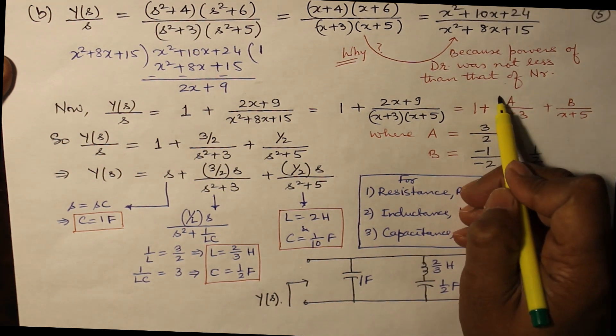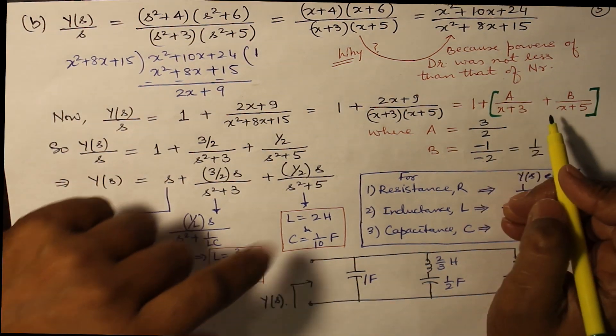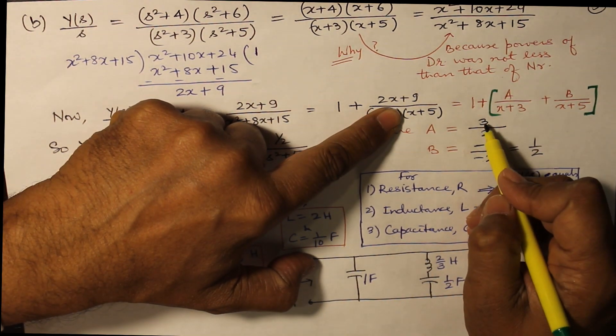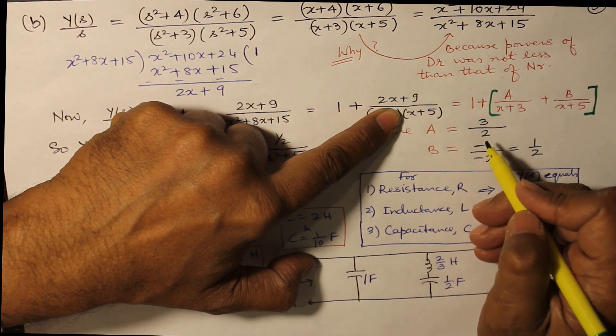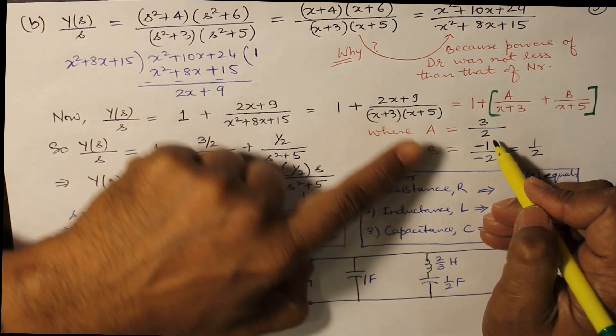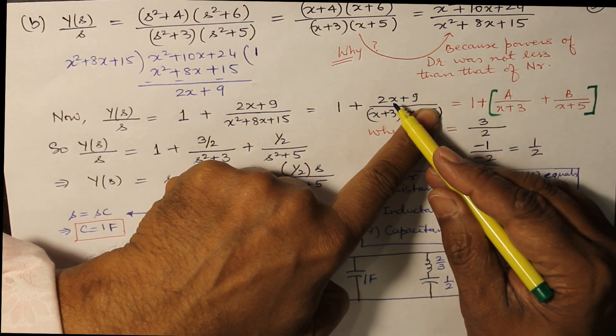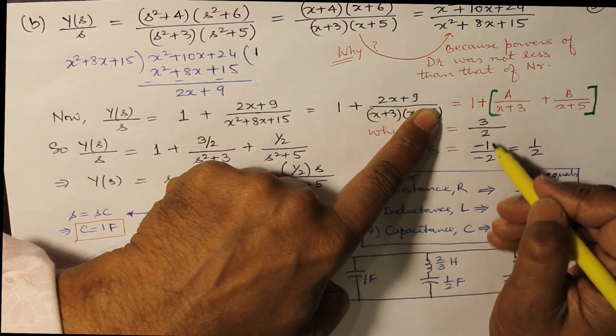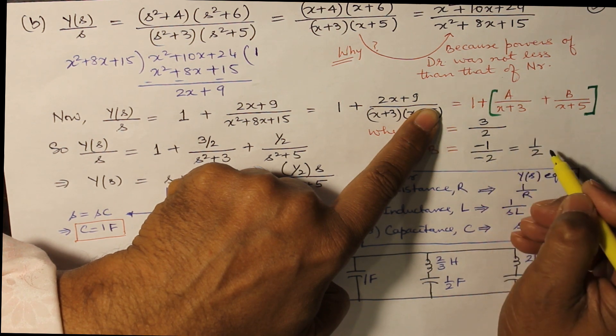When a is equal to -3: 2(-6)+9, that is 3, over -3+5, that is 2. So 3/2. And similarly, x+5, x equals -5. Put kiya. So -10+9, that is -1, over -5+3, that is -2. So that gives you 1/2.